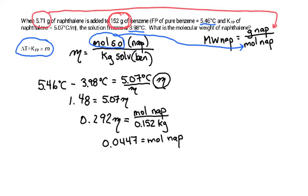And now we have our denominator and our fraction. The molecular weight is 5.71 grams divided by 0.0447 moles, giving us a molecular weight of 127, three significant figures, grams per mole.